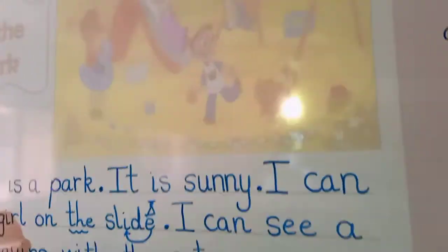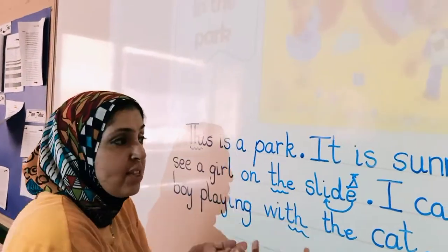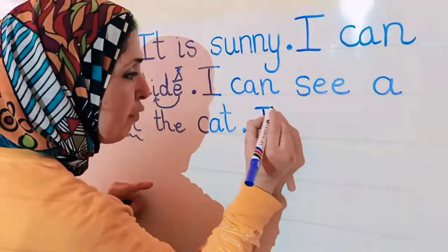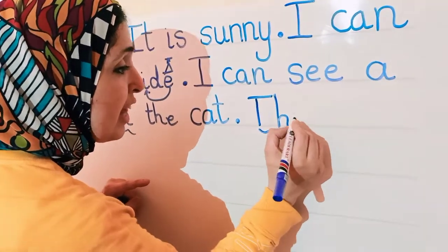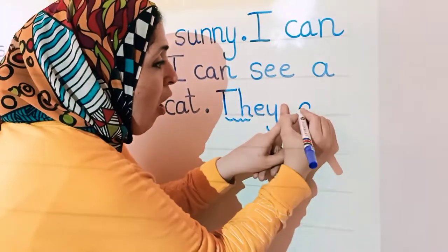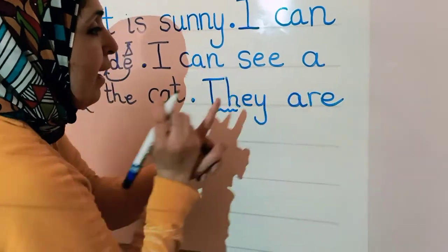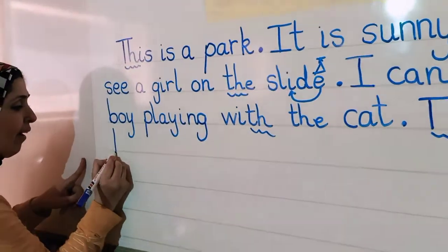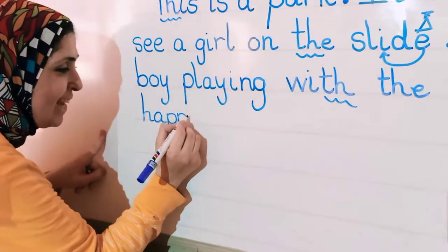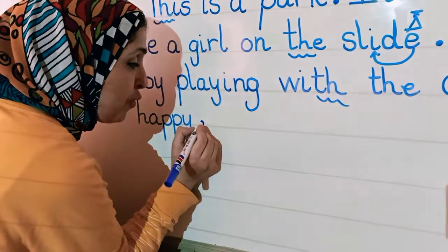Are they happy or sad? They. Why did I say they? I did not say I. Because there are many children. One, two, three, four. They are four children. So I have to say they. Starting with digraph T, H. They, put my finger, are happy. And a full stop.